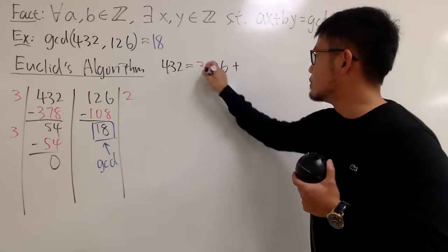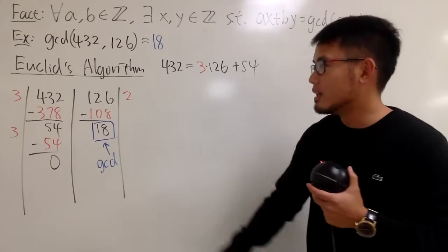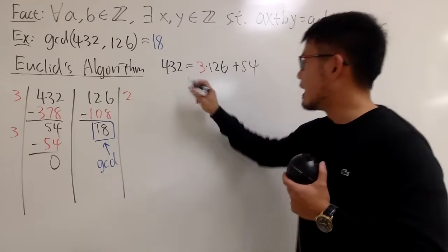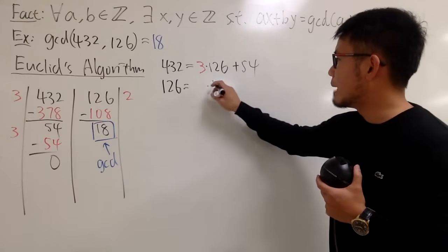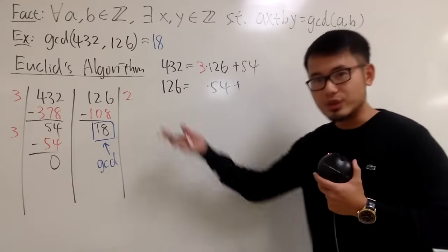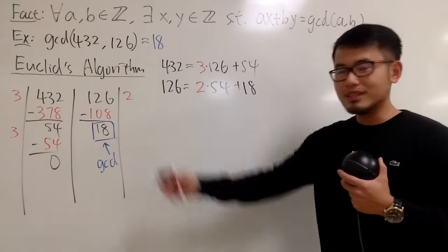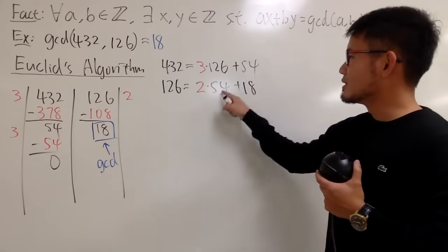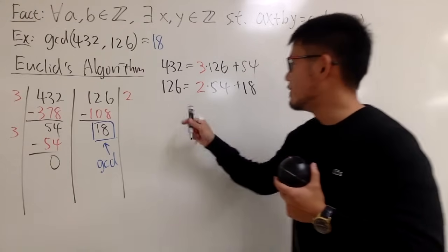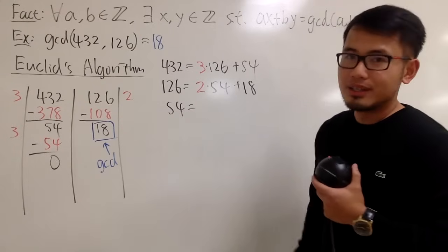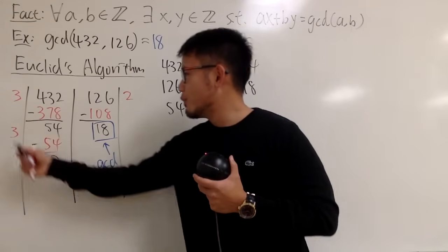Next, use 54 and divide into 126. We write 126 equals 2 times 54 plus 18. Notice the diagonal movement — each remainder feeds into the next step. Then 54 equals 3 times 18 plus 0. We don't need to write the plus 0 if we don't want to. The remainder before this step — the 18 — is the GCD. Done.